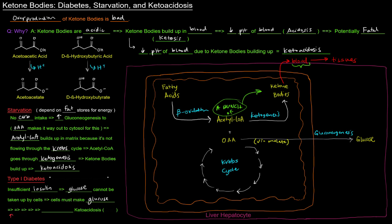And what you'll notice here is that I have just a bunch of these little arrows. And the reason why I have that is just an indicator that basically, since the cells must have to make glucose, it's the same situation from here onward. From here onward, the same situation happens in type 1 diabetes as it did with starvation. We have an increase in gluconeogenesis, causing the oxaloacetate to make its way out into the cytosol to basically be involved in gluconeogenesis. And then the acetyl-CoA builds up in the matrix because it's not flowing through the Krebs cycle. Then the acetyl-CoA goes through ketogenesis, ketone bodies build up, and we have ketoacidosis.